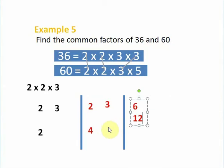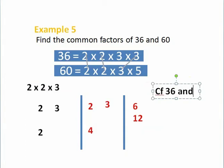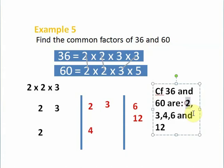We say the common factors of 36 and 60 are, so let's list the numbers we have: 2, 3, 4, 6, and 12. Amazing, right? So let's do one more.